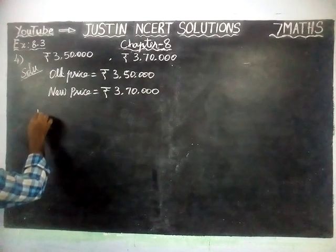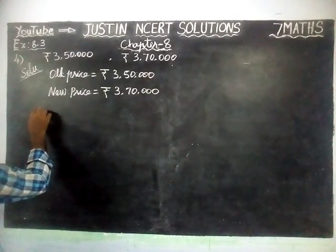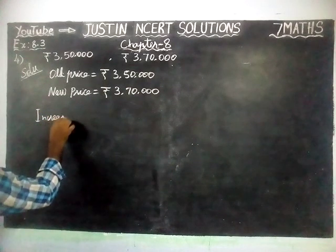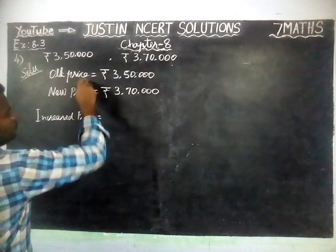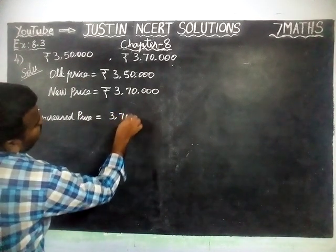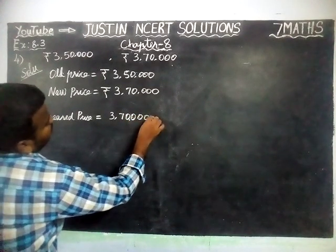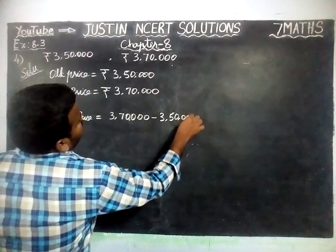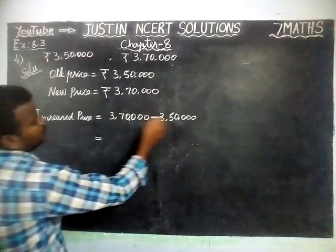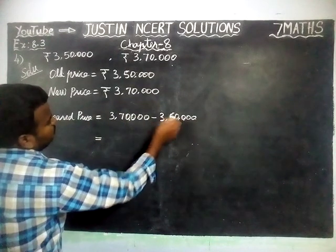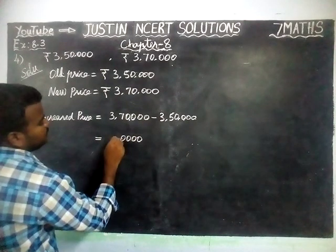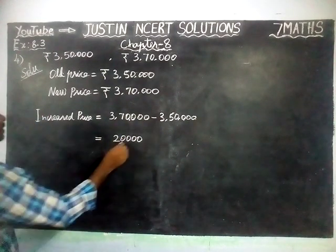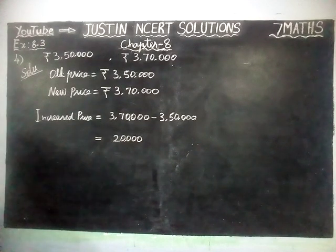Price increase, or Increased price, is equal to New price minus Old price: 3,70,000 minus 3,50,000. The zeros cancel, 7 minus 5 is equal to 2, and 3 minus 3 is equal to 0. So the Increased price is equal to Rs. 20,000. Now we have to find the Increased price percentage.